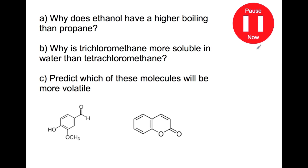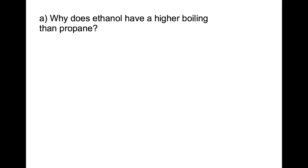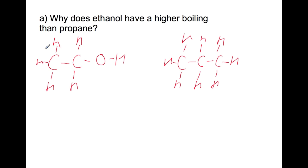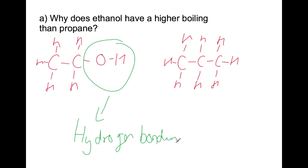Pause the video and try to answer these questions. Why does ethanol have a higher boiling point than propane? If we draw out the structures, based on their gram formula mass these have comparable molecular size. However, the boiling point of ethanol is significantly higher because of the OH group, which leads to hydrogen bonding between ethanol molecules. Propane doesn't have this, so it only has London dispersion forces. Hydrogen bonding is stronger and therefore requires more energy to boil ethanol.